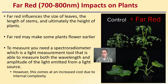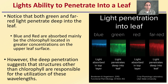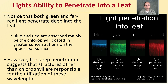We can see the change in a tomato plant and what looks like a squash plant as well — control plants versus giving them Far Red — we can see that much more stretched appearance. Regarding light's ability to penetrate the leaf, both green and Far Red light penetrate deep into the leaf, whereas blue and red are absorbed mainly in the chlorophyll, which is located in greater concentrations on the upper leaf surface. The deep penetration suggests that structures other than chlorophyll are responsible for the utilization of these particular wavelengths.